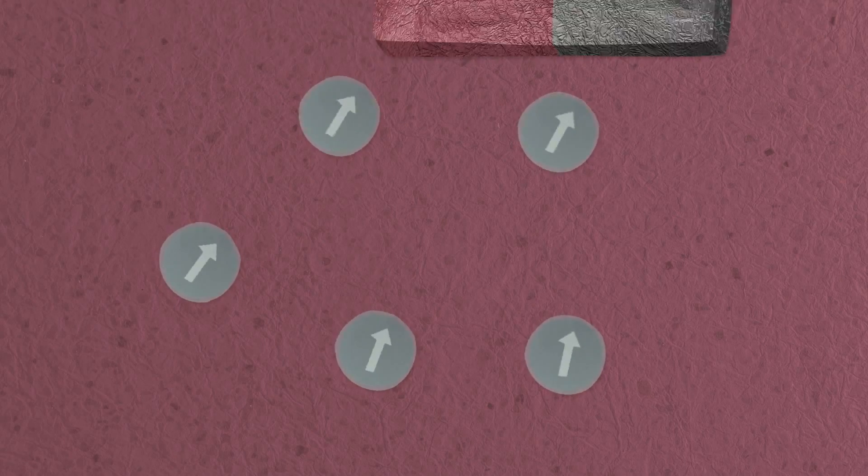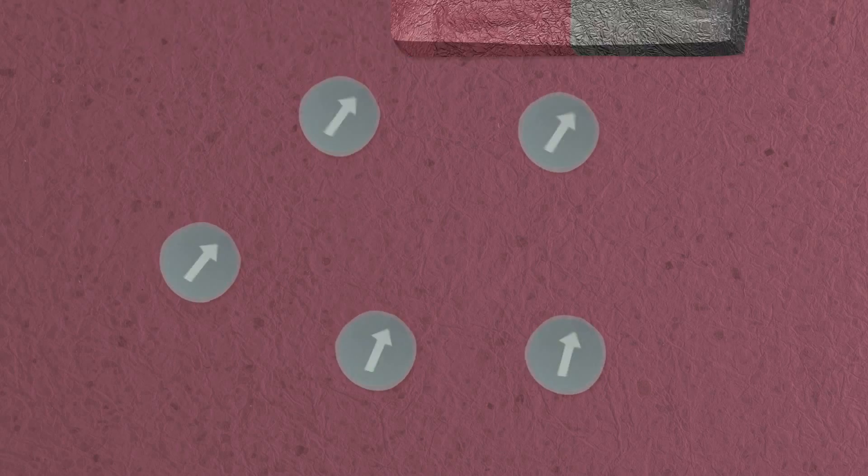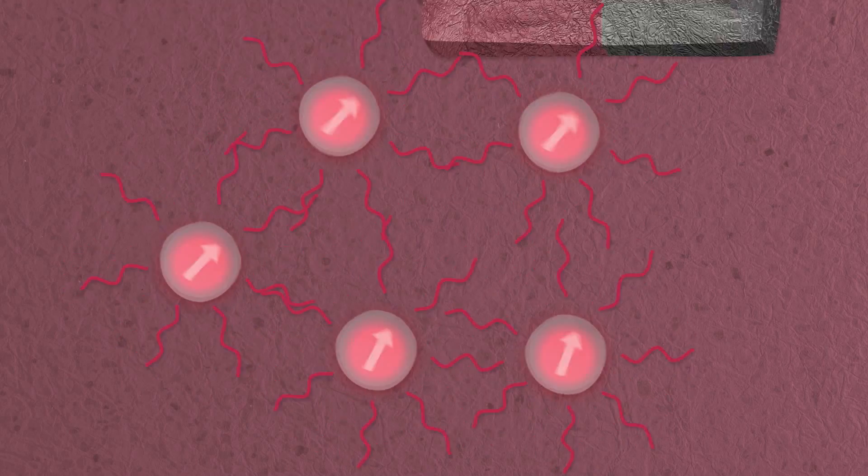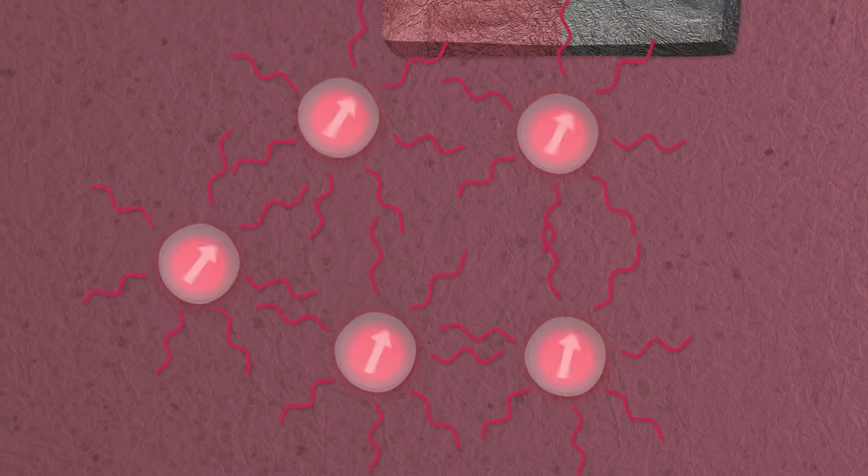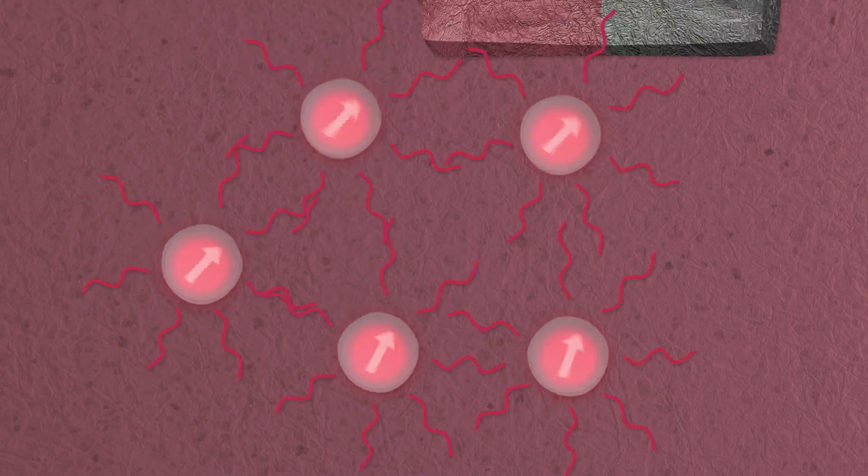When they move quickly, they start getting hotter and hotter. If they're in the body, this can increase the temperature of the tissue around the nanoparticle, which is called hyperthermia. This can be very helpful when treating cancer.